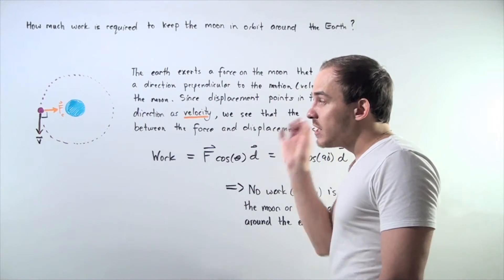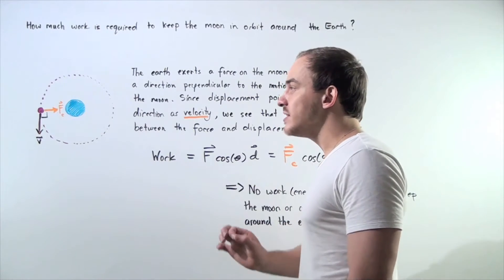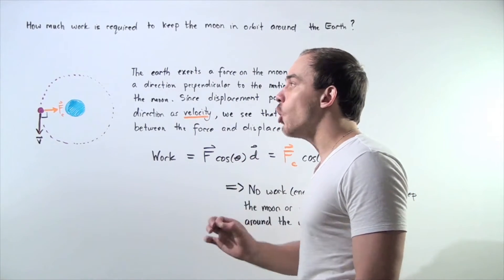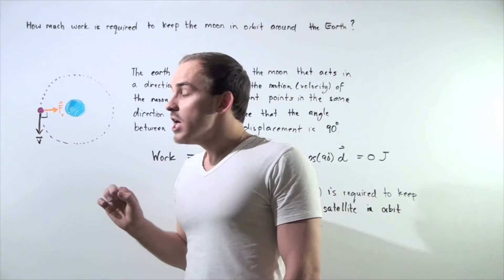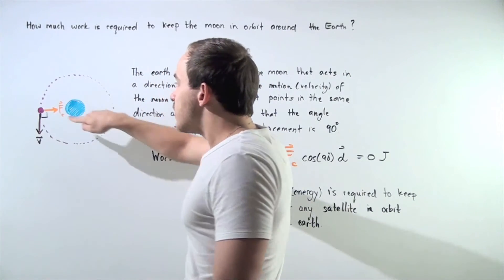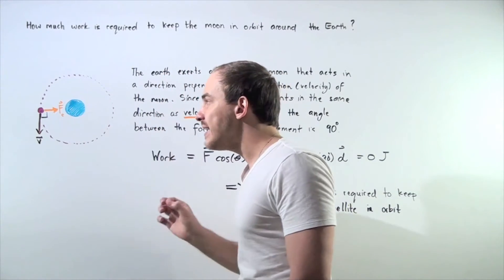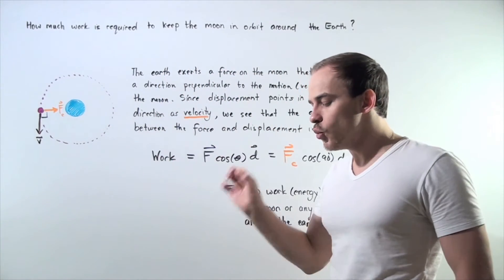At the same time, the magnitude of velocity remains constant and the direction of the velocity is always tangent to the pathway. That means because this is a circle, these two vectors are at an angle of 90 degrees to one another.